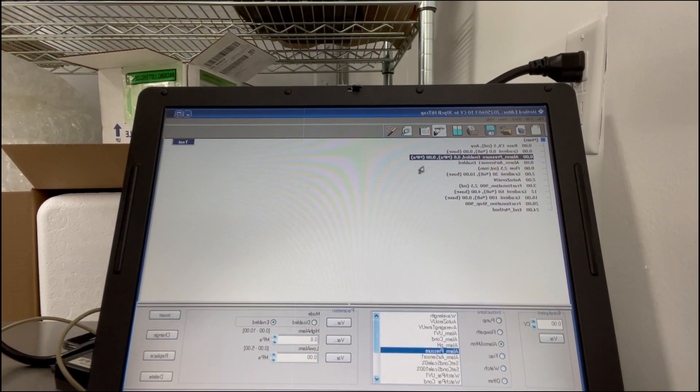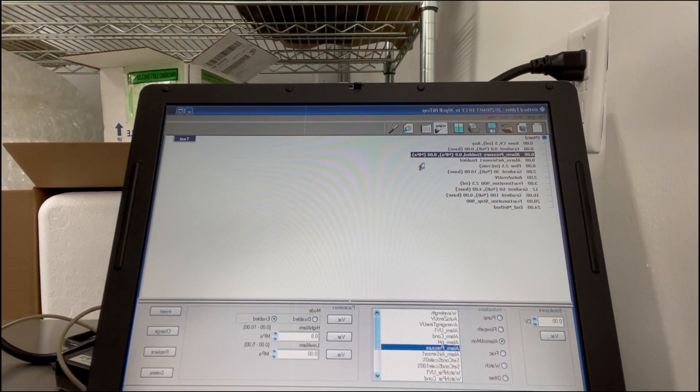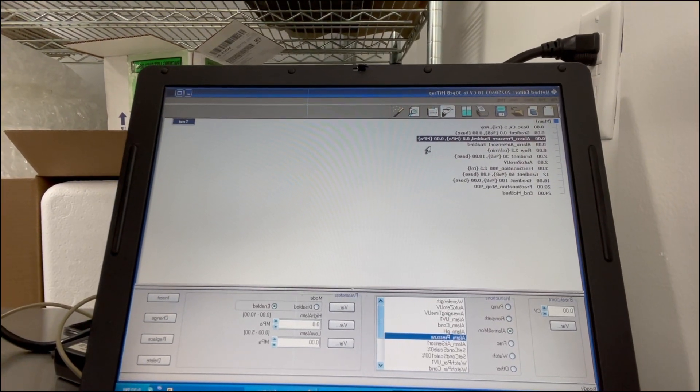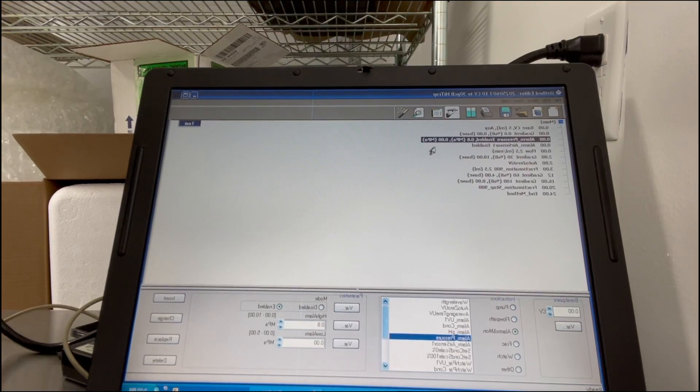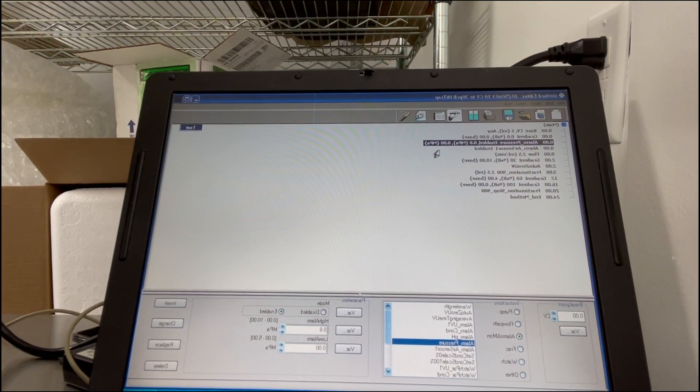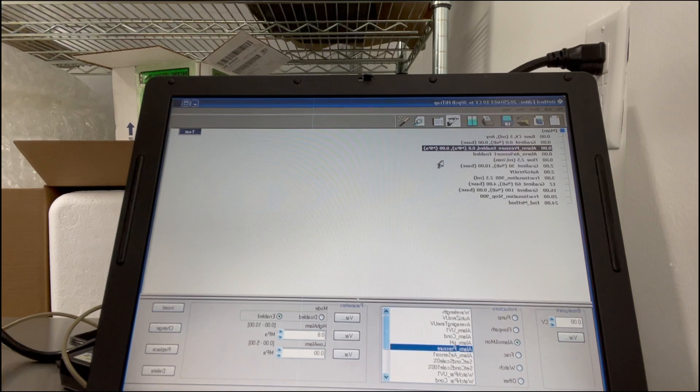I set the alarm pressure to 0.8. That's because the column has a high pressure limit of 0.4 and the system already has a pressure of 0.4. So anytime it goes above 0.8 I want it to shut down the pump rather than crushing my column.